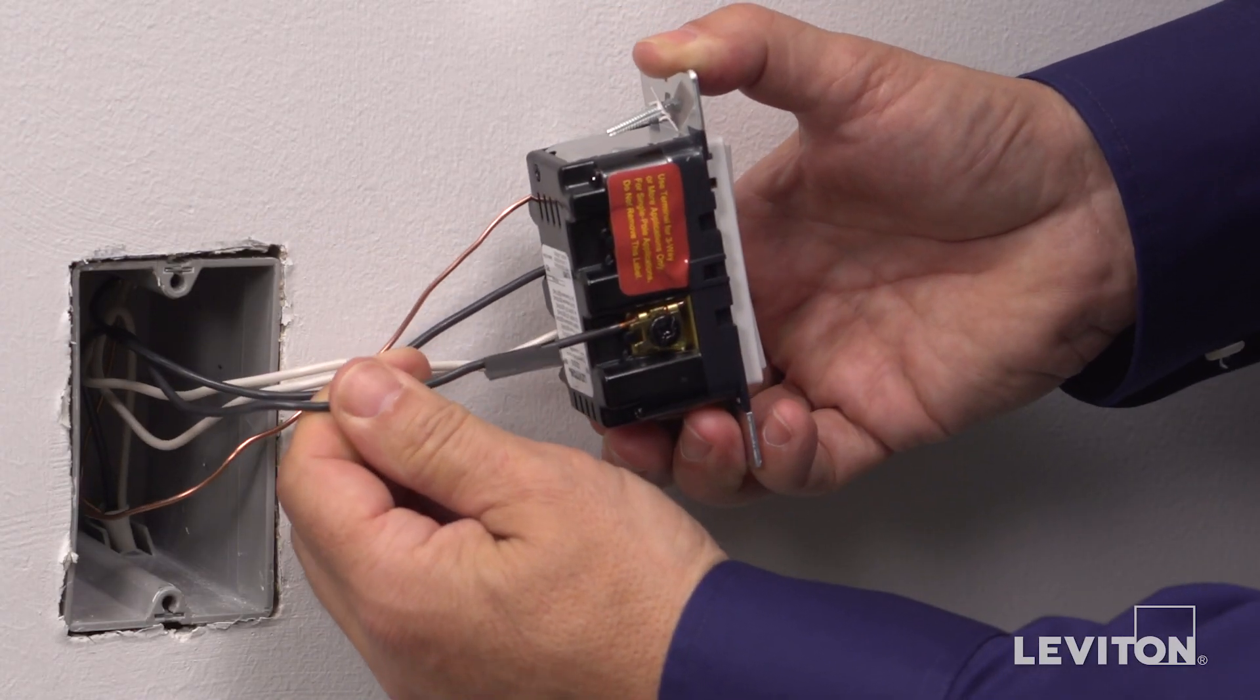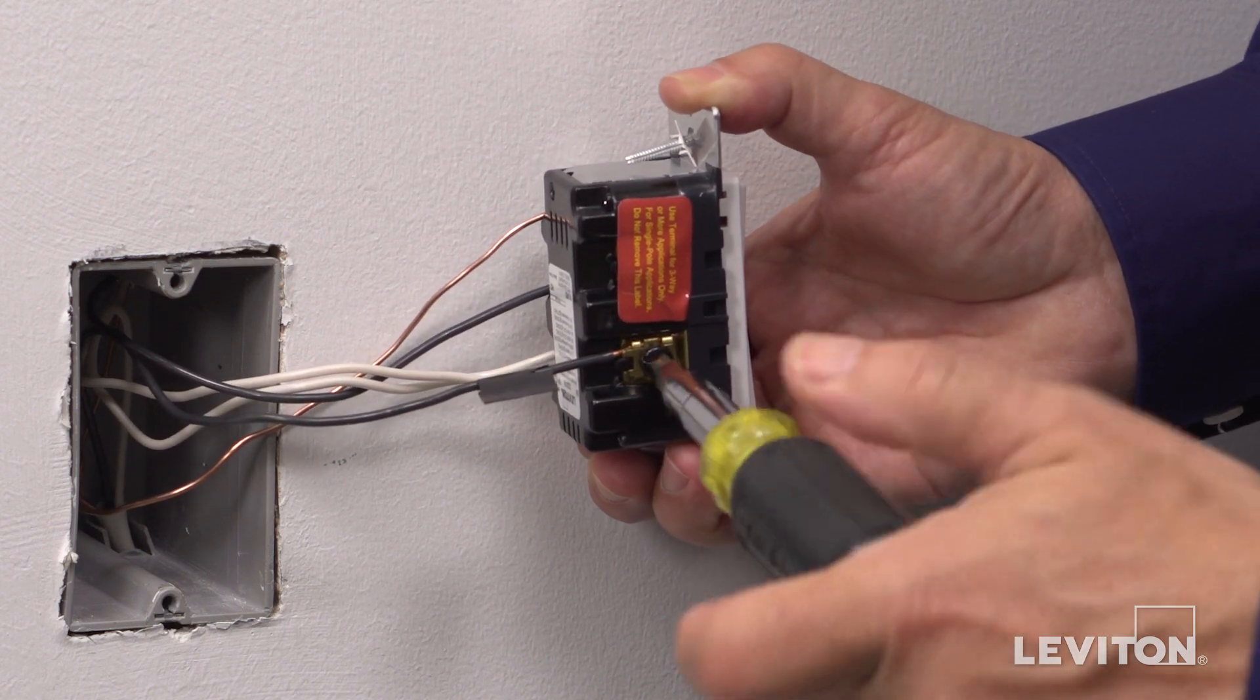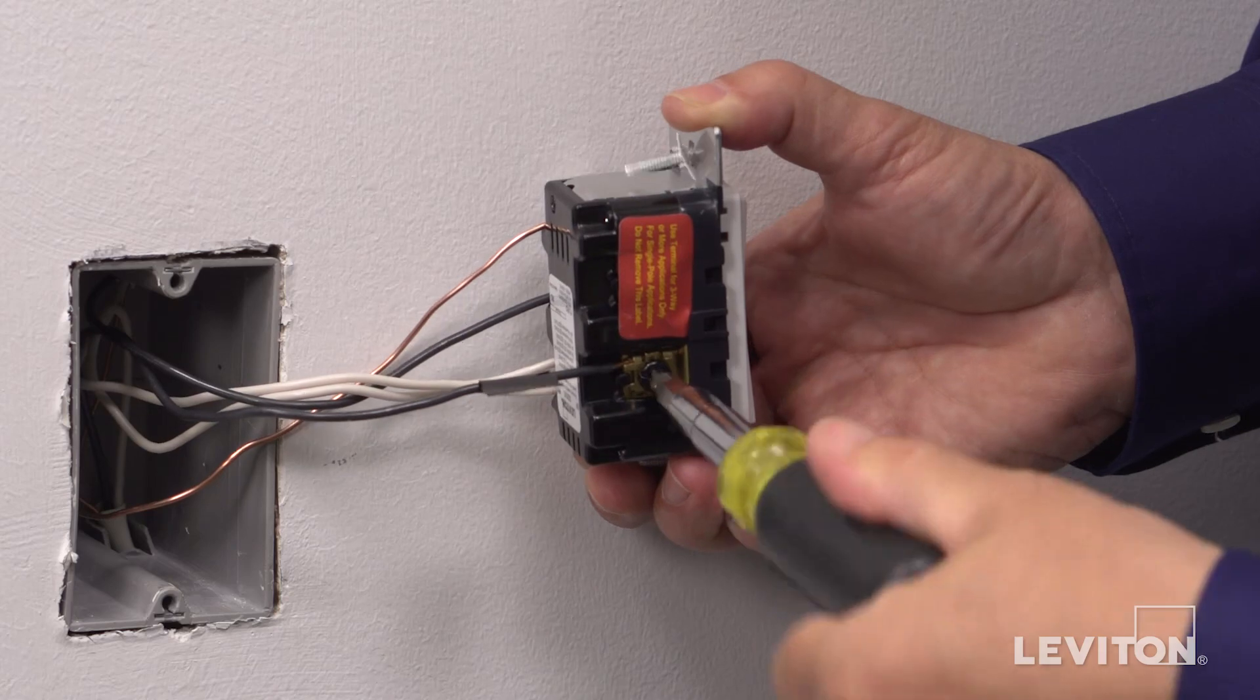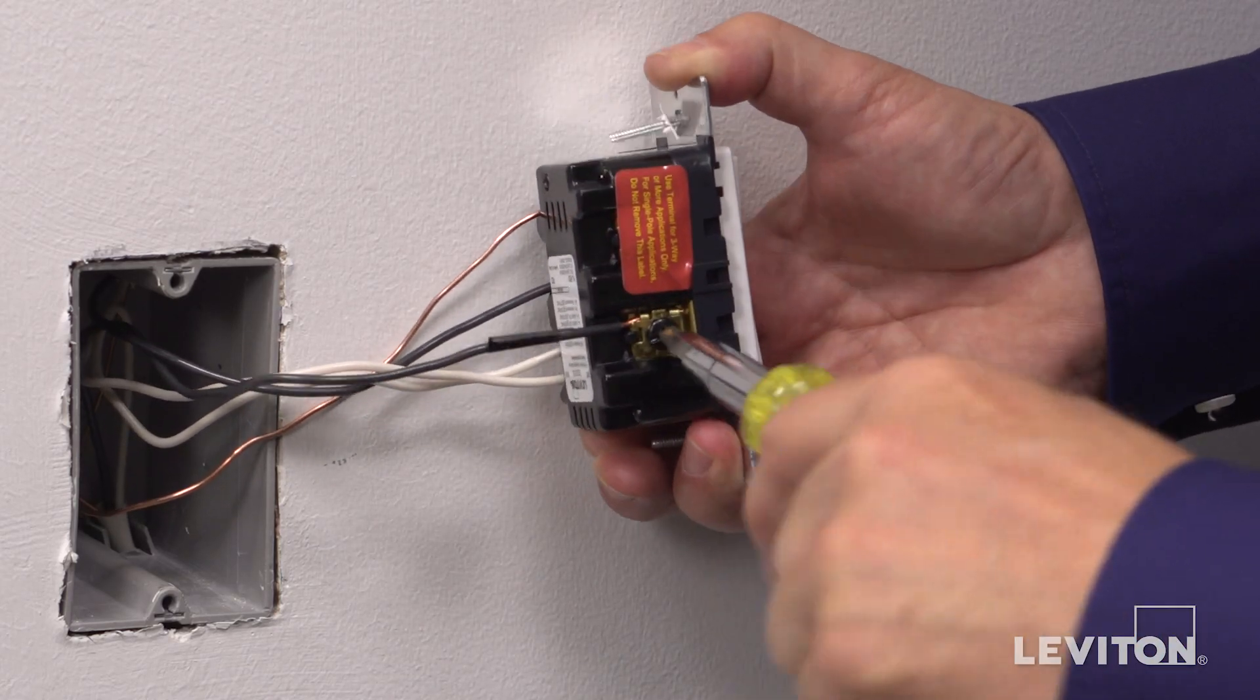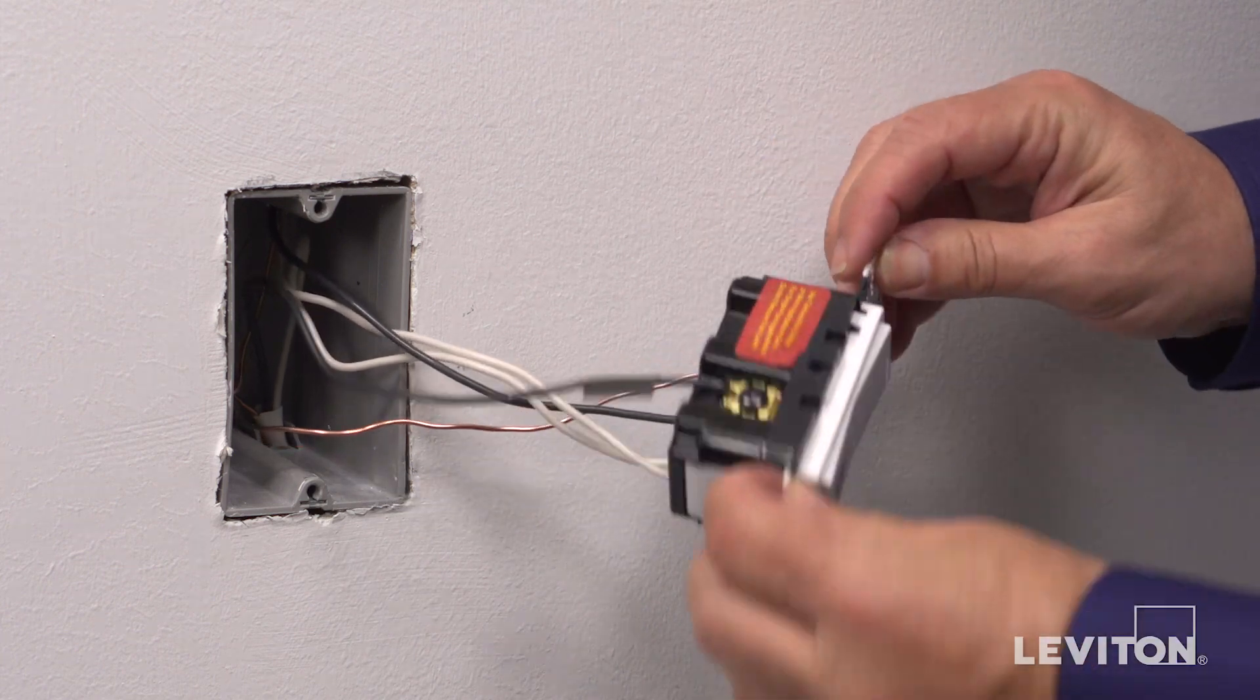Finally, connect the line hot wall box wire to the terminal screw marked BK. Tug on all conductors to ensure termination is secure.